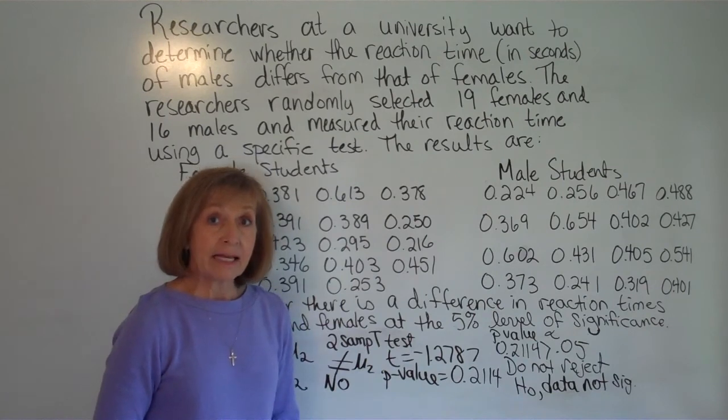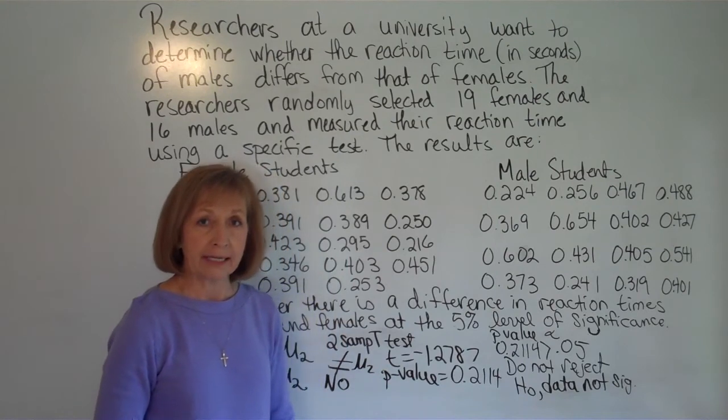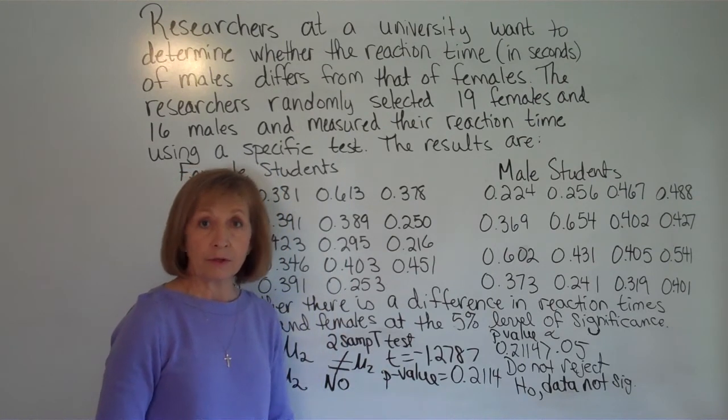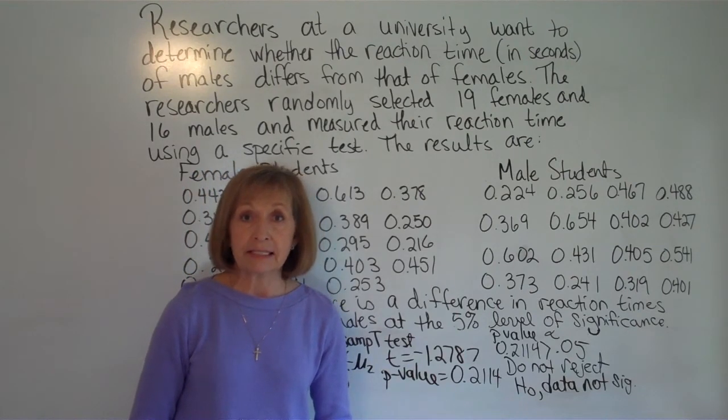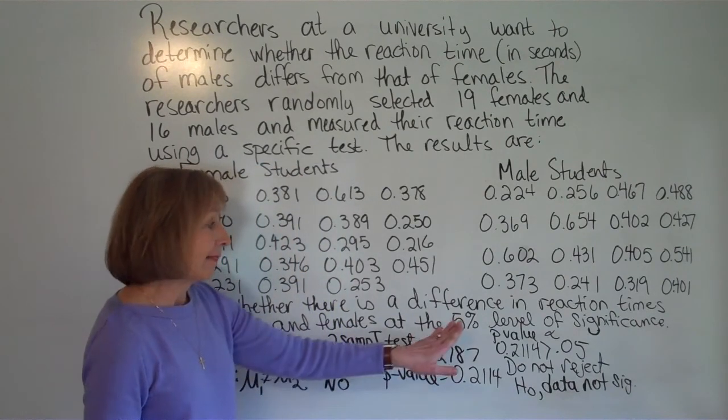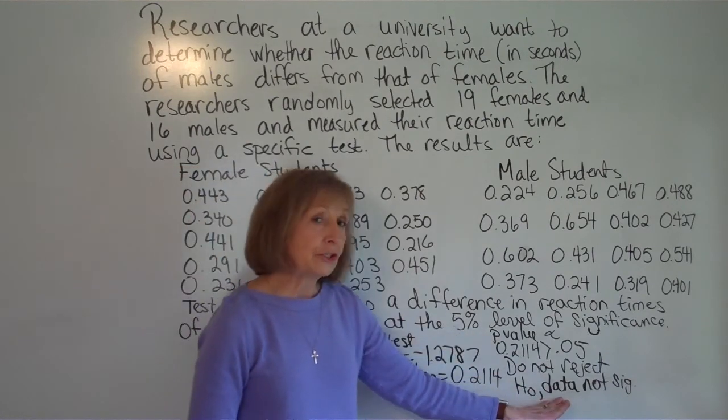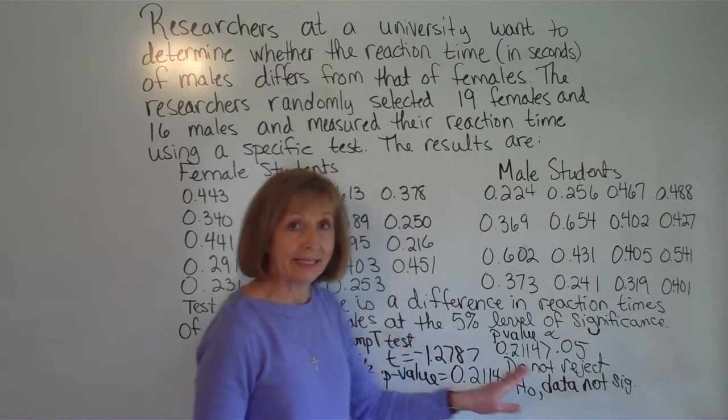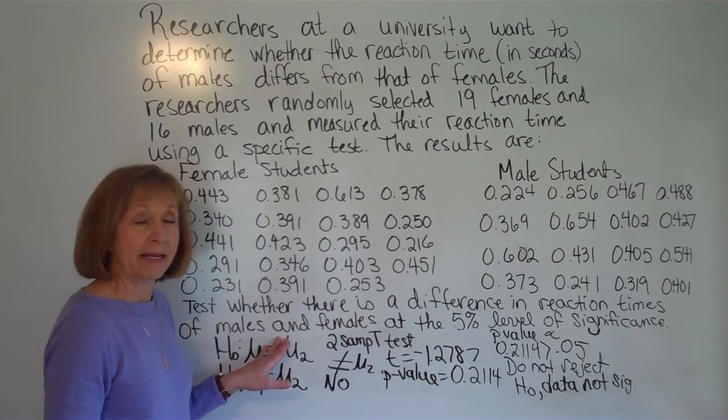So we want to write a sentence. And I don't have room to write the sentence on the board so I'm just going to say it. And if you need to replay it you can replay it. So we want to state the level of significance, our decision on whether we reject the null or not, and then whether our data indicates or is significant to indicate what the alternate was saying. So we're going to say for this problem, at the 5% level of significance, do not reject the null. The data is not significant to indicate that the reaction time of the females and the males differs.